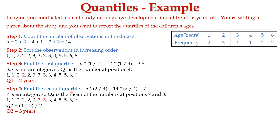Next, we need to find the second quartile. The formula to find the second quartile is n multiplied by 2 divided by 4. So 14 times 2 divided by 4 is equal to 7. Since 7 is an integer value, Q2 is the mean of the numbers at positions 7 and 8. The values at positions 7 and 8 are both 3, so Q2 equals 3 plus 3 divided by 2, which gives a value of 3 years.